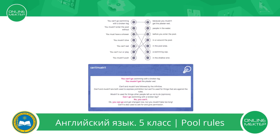Let's have a look at more examples with must and mustn't. Look at these sentences, please. You must have a shower before you enter the pool. You mustn't enter the pool without a swimming cap. We can also use modal verb can't. Can't and mustn't are both used to express prohibition, but can't is used for things that are against the rules. For example, you can't eat in the pool area. You can't run or play in or around the pool. Mustn't is used for things other people tell us not to do — these are opinions. For example, you mustn't dive in the shallow end because it is dangerous and someone tells you not to dive.